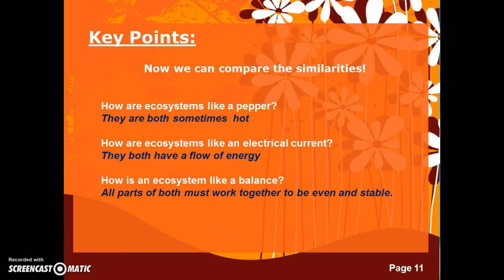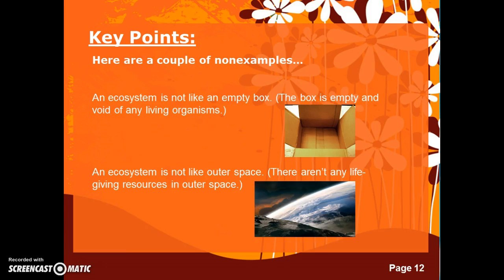Now let's take a look at the opposite side. We draw contrast between the ecosystem and non-examples. If we know what an ecosystem is, we will definitely be able to understand what it isn't. An ecosystem is not like an empty box — the box is empty and void of any living organisms, and by definition we know that ecosystems contain living and non-living things. An ecosystem is not like outer space. There aren't any life-giving resources in outer space.